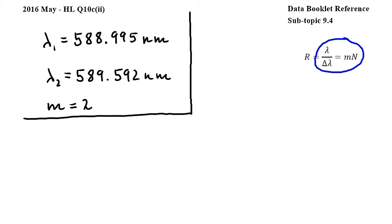We will use this equation from subtopic 9.4 where lambda in our case will be the mean or average of the two wavelengths given, delta lambda is the difference of the two wavelengths, m is the order of the diffraction, and n is the number of slits in the diffraction grating.